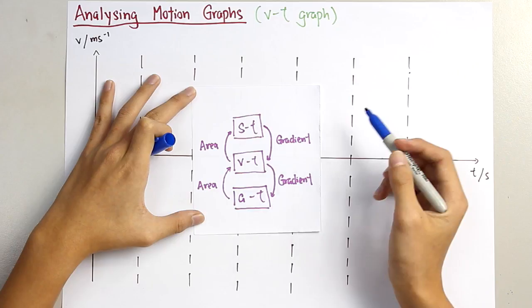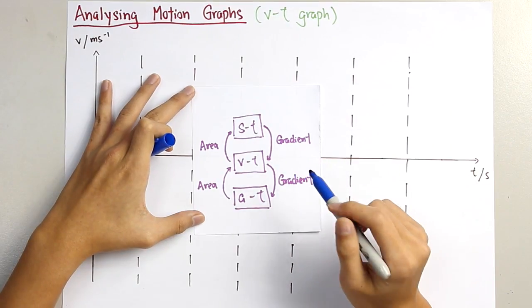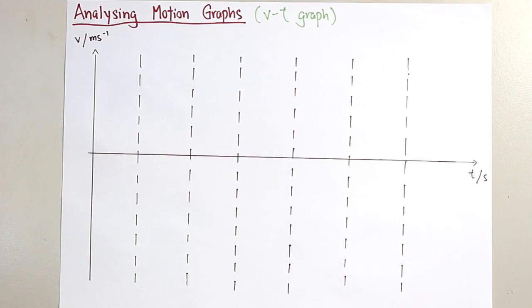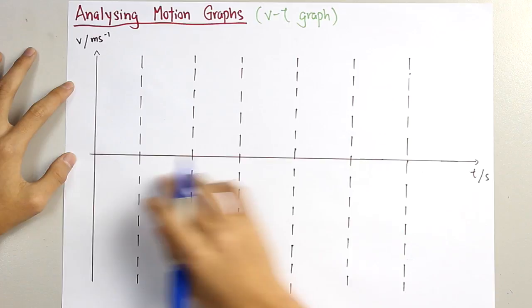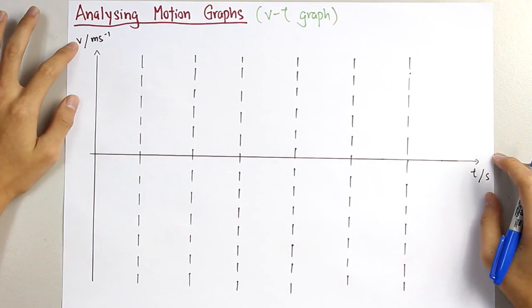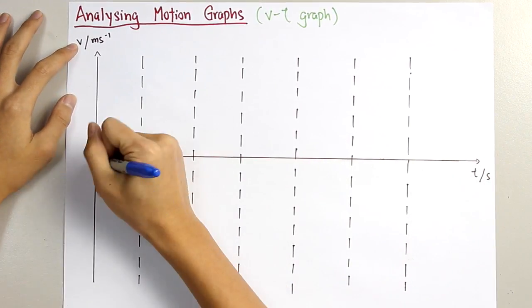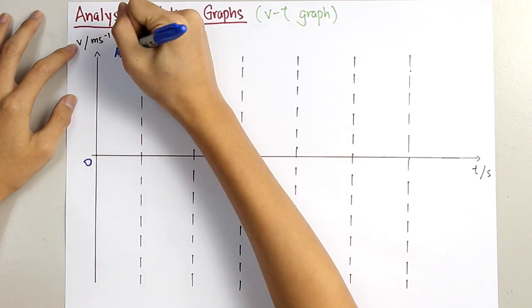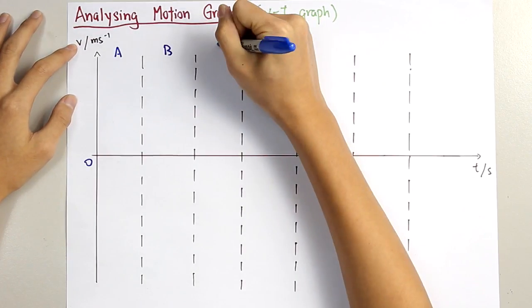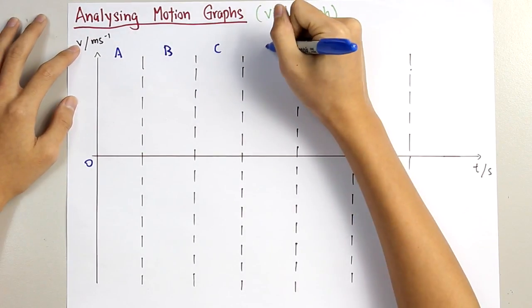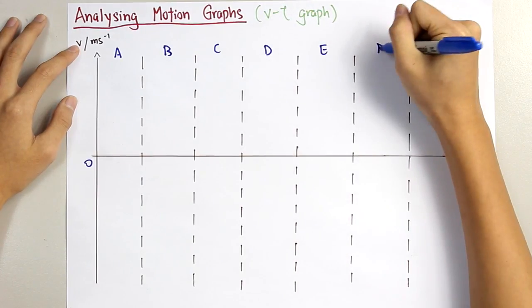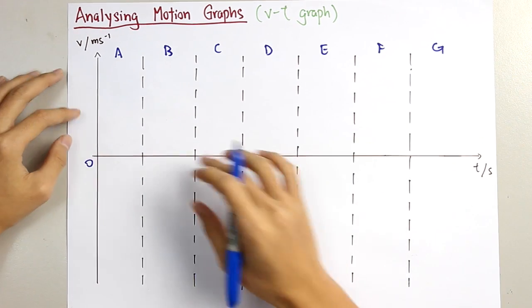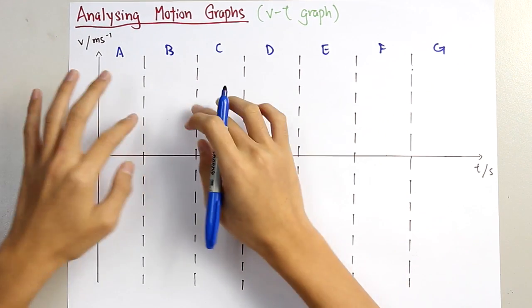You need to remember this as we will use it later for analyzing graphs. First, you are given this VT graph, which you need to label V and T. This is zero. Let's label the periods of time as A, B, C, D, E, F, and G. So there are six periods of time, and we will analyze it according to each section.